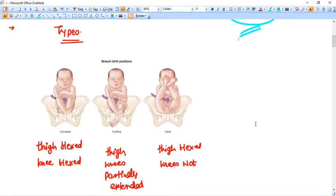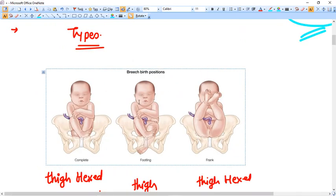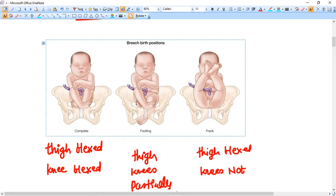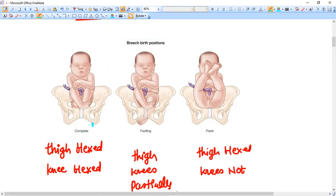Now these are the types of breech. The first one is called complete breech. In complete breech what we are trying to say is it has totally flexed attitude. Thighs are flexed, knees flexed, limbs flexed, head flexed. That is called complete breech.